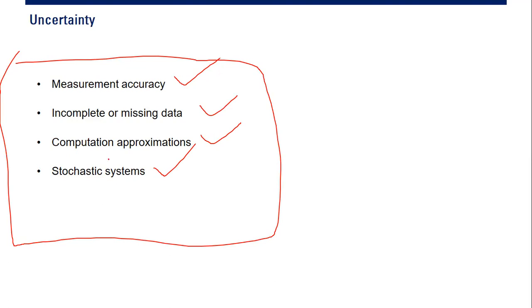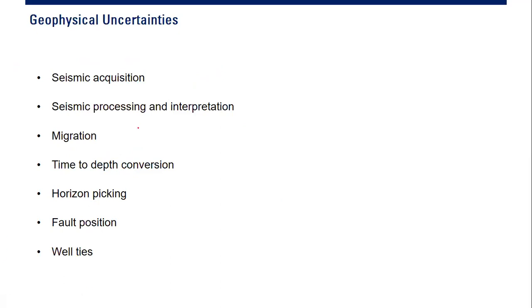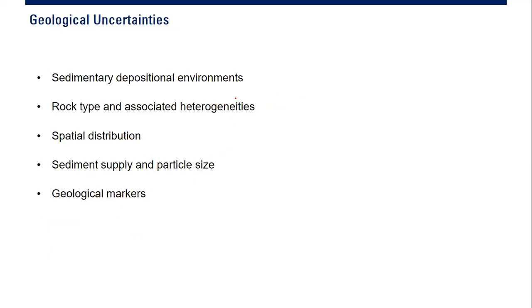Geophysical uncertainties include seismic acquisition, seismic processing and interpretation, migration, concept errors in time-to-depth conversion, faults, horizon picking, fault position, and well ties. Geological uncertainties also exist — for example, sedimentary depositional environment. We are not very certain about these because it's all about concept and imagination, so there will be uncertainty.